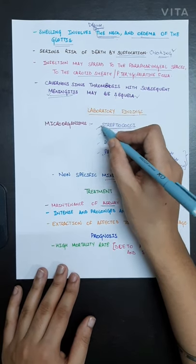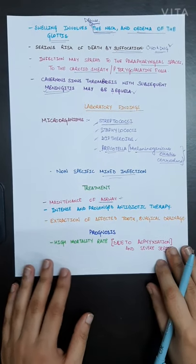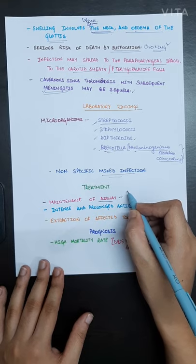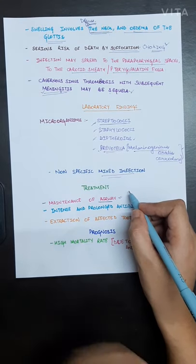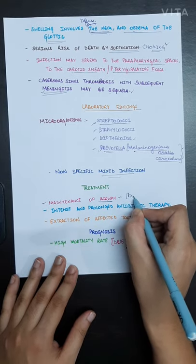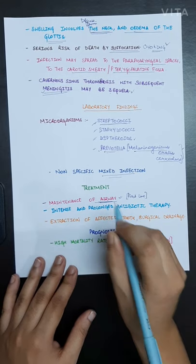Now the treatment part: as we know, Ludwig's angina is a lethal disease as it causes death by suffocation, so our first line treatment should be maintenance of airway. Intense and prolonged antibiotic therapy is required.